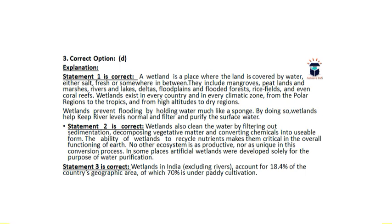Wetlands prevent flooding by holding water like a sponge, helping keep river levels normal and filtering and purifying surface water. When there is agricultural runoff, wetlands play an important role in preventing poor-quality water from being added into rivers. Statement two is also correct because wetlands clean water by filtering out sedimentation, decomposing vegetative matter, and converting chemicals into usable forms. The ability of wetlands to recycle nutrients makes them critical to Earth's overall functioning.